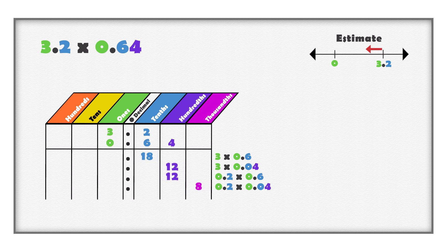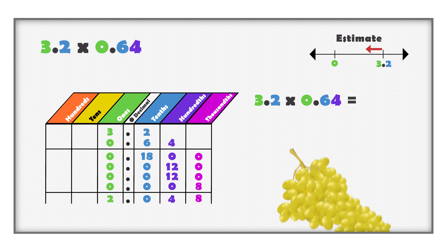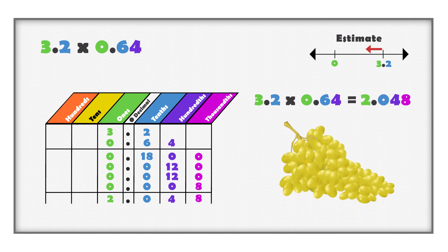Remember, when adding decimals, always add together digits of the same place value. It is helpful to put zeros in the chart. We get eight thousandths, twenty-four hundredths, eighteen tenths, and zero ones. Remember, one group of ten hundredths is one tenth. So twenty-four hundredths is the same as two tenths and four hundredths. We already have eighteen in the tenths column; two more makes a total of twenty tenths. One group of ten tenths is one whole. Twenty tenths is two wholes. The product is two and forty-eight thousandths, which rounds to two dollars and five cents.